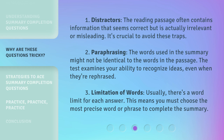1. Distractors: The reading passage often contains information that seems correct but is actually irrelevant or misleading. It's crucial to avoid these traps. 2. Paraphrasing: The words used in the summary might not be identical to the words in the passage. The test examines your ability to recognize ideas, even when they're rephrased.